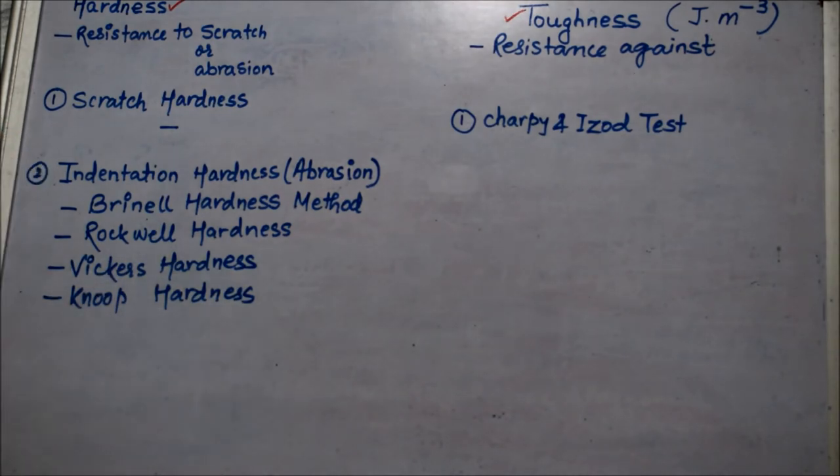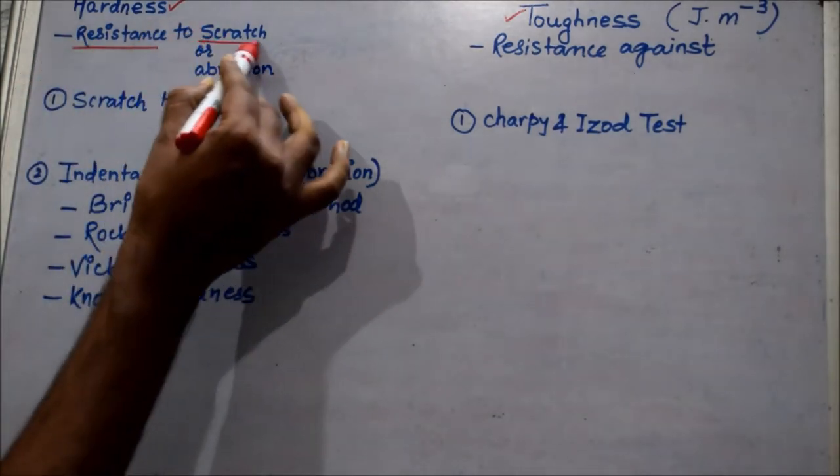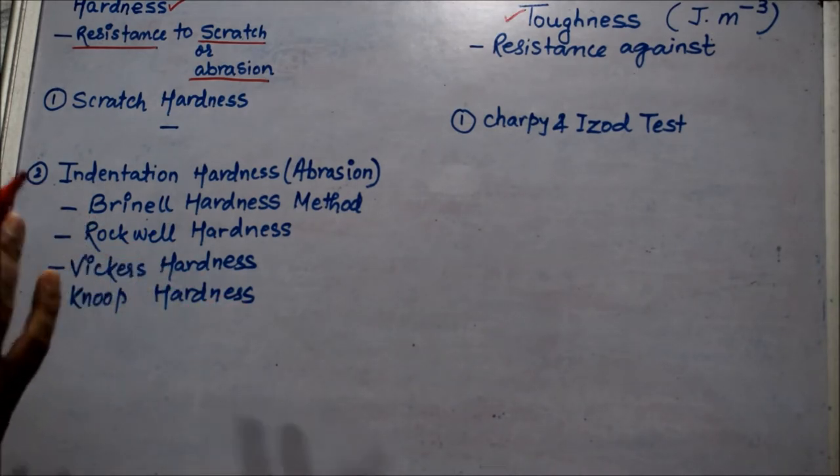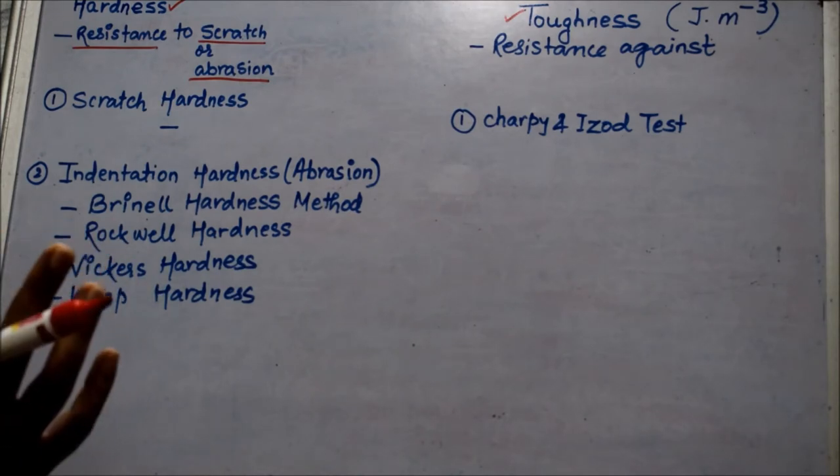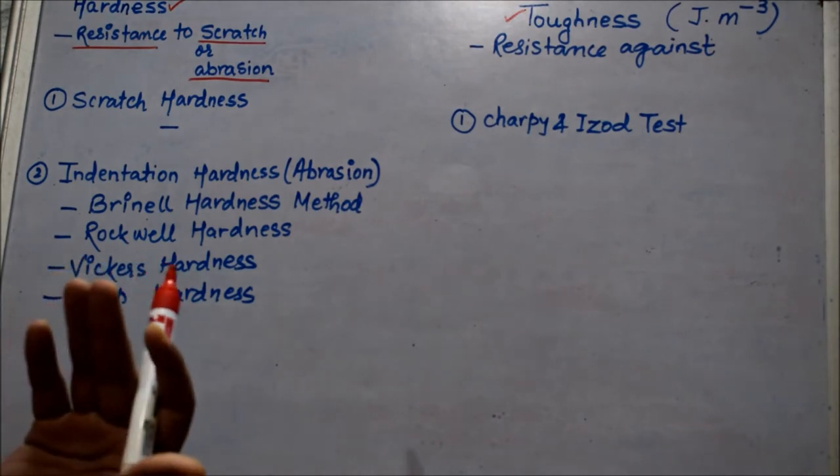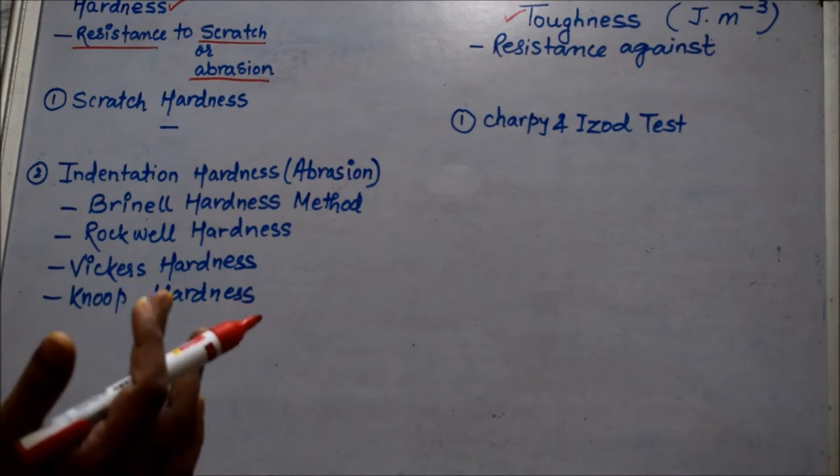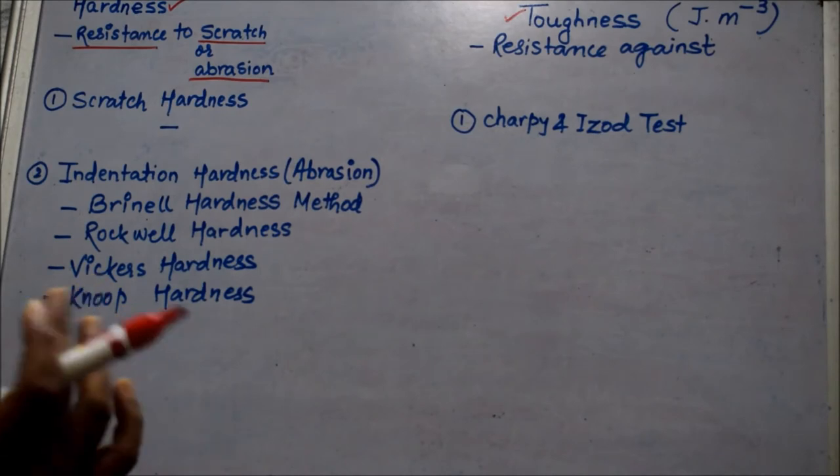So first, hardness. Hardness is a property of a material due to which the material shows resistance to scratch or abrasion. This is the shortest definition you can say about hardness. Another way of looking at hardness is that it is a measure of how resistant a solid matter is to various kinds of permanent shape change when a compressive force is applied on it.